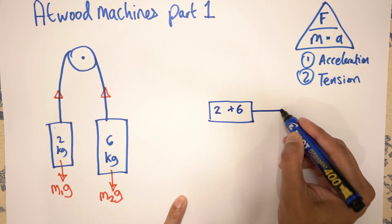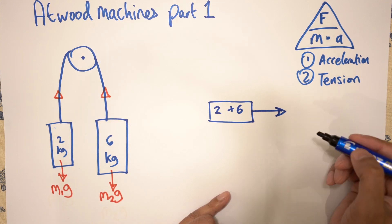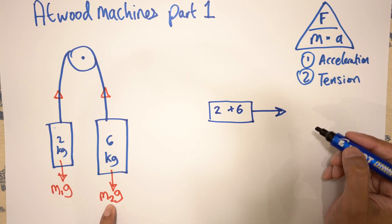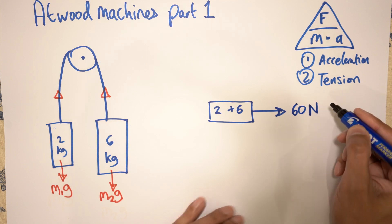And over here you're going to have m2g, and m2g is going to be 6 times 9.8, or if you want to make it simple, 6 times 10, and that's 60 newtons over here.